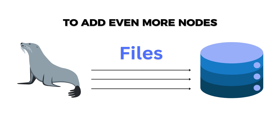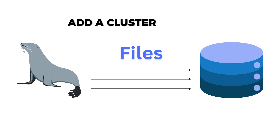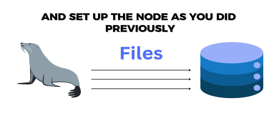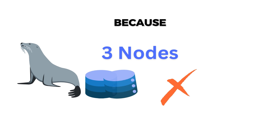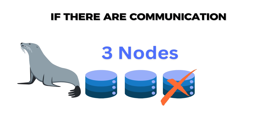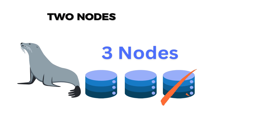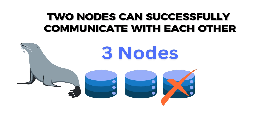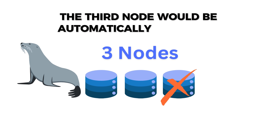To add even more nodes, install MariaDB, configure the plugin, add a cluster address and set up the node as you did previously. The minimum recommended size of the cluster is 3, because if there are communication problems between the nodes and two nodes can successfully communicate with each other, the third node would be automatically kicked out.